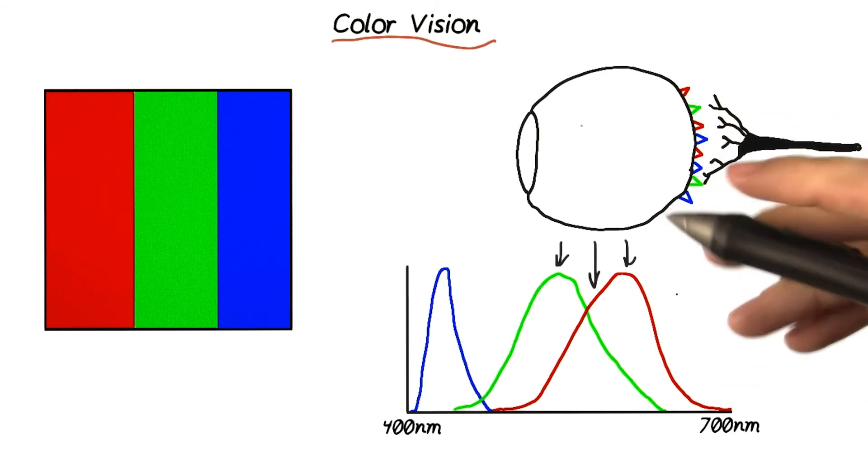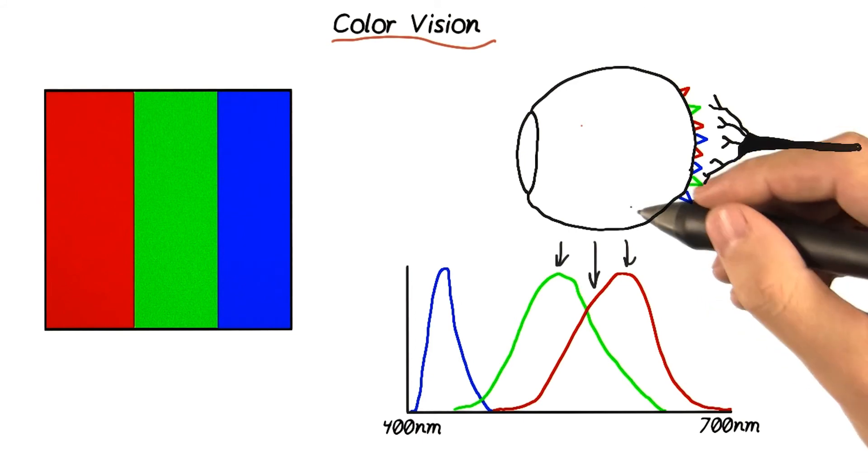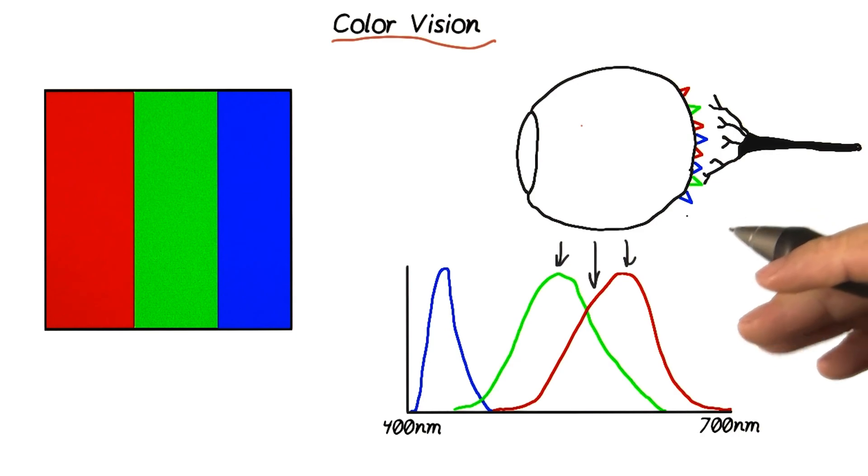The unintuitive result is that any visible color can be generated by a combination of red, green, and blue. Human color vision is a crazy topic, and you can check out the instructor notes to learn more.